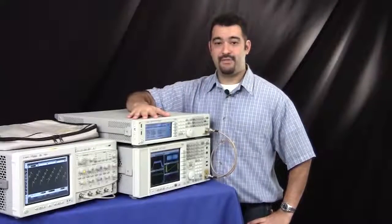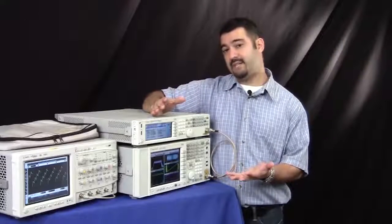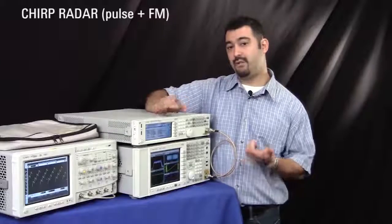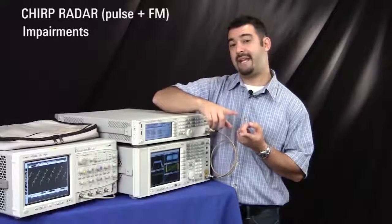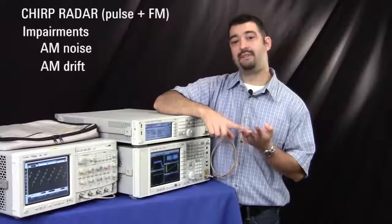So for today's demonstration, what we're going to be using as an example is a radar signal. In this case, it's going to be a chirped FM radar signal. And what we're going to be doing is adding impairments. So we're going to be adding AM noise, AM drift, as well as frequency drift.